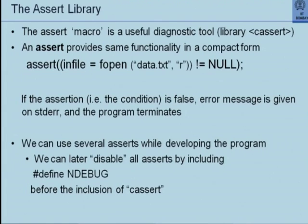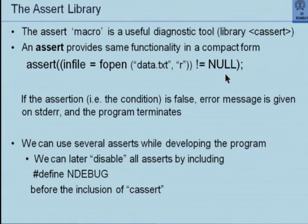The assert library is a macro — a useful diagnostic tool. To use it, you include a special library called 'cassert'. I can write 'assert(infile == fopen(something) != null)'. Assert means I am stating an assertion — I believe this is true. I believe that whenever I open this file it will be properly opened and therefore will not be a null pointer. There are two possibilities: the assertion is true, in which case I continue; or the assertion is false, meaning the file was not opened. In that case, an error message is given — not to stdout but to stderr.